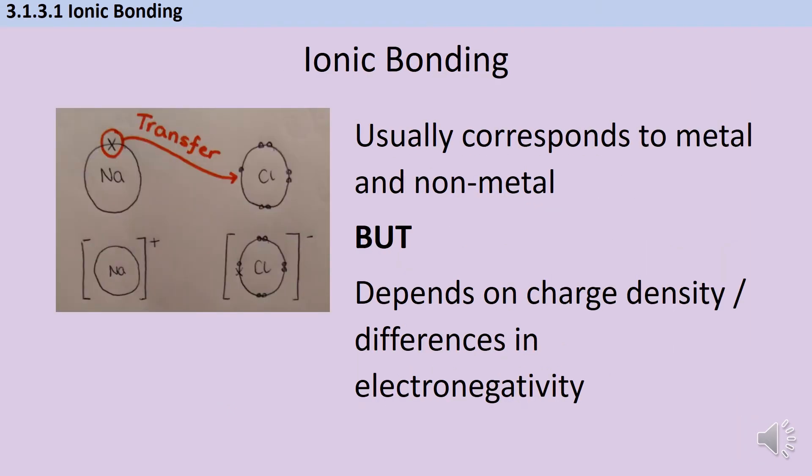At GCSE we say two non-metals have a covalent bond, whereas a metal and non-metal have an ionic bond, and generally that's true. But it really comes down to the difference in charge density or electronegativity, and a metal and non-metal are likely to have bigger differences in charge density, leading to ionic bonds.